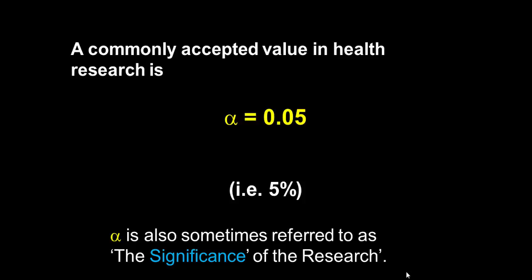Now alpha is sometimes referred to as the significance of the research, and it's no accident that this value of 0.05 crops up as a magic value for something called the p-value, which I will talk about in another video. It's interesting to reflect that we're happy to accept a twenty percent chance of a Type II error but only a five percent chance of a Type I error.